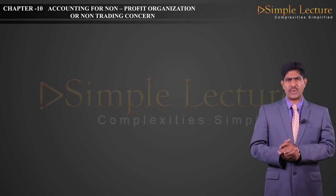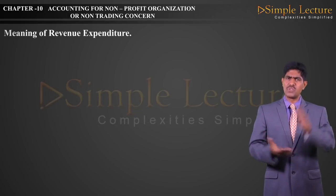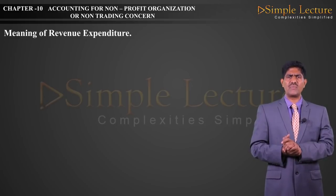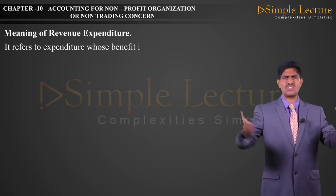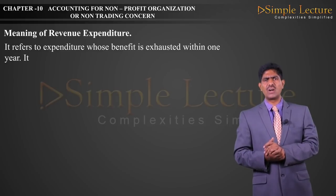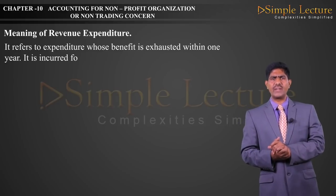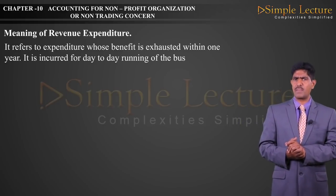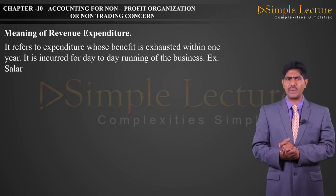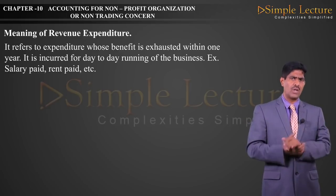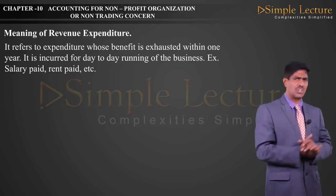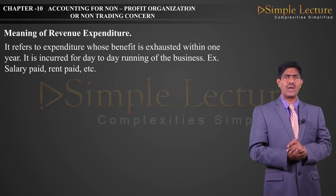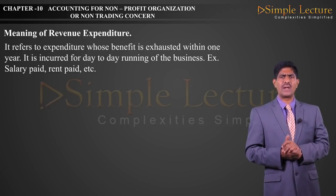Meaning of Revenue Expenditure: opposite of capital expenditure, it refers to expenditure whose benefit is exhausted within one year. It is incurred for the day-to-day running of the business. Revenue expenditures are known in nature — we are aware of them — and are regular and routine in nature. Examples: salary paid, rent paid, etc.